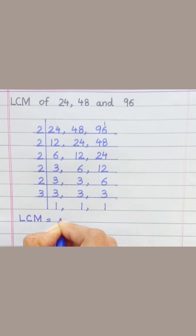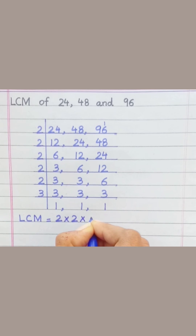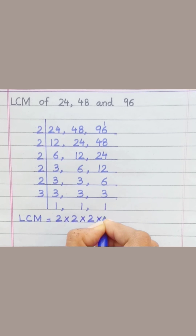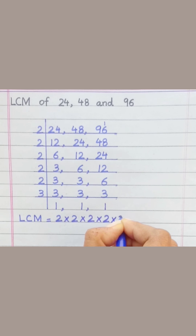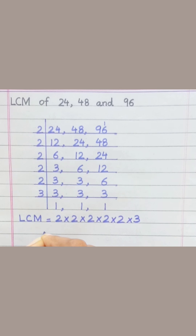Two multiply two multiply two multiply two multiply two multiply three equal ninety-six.